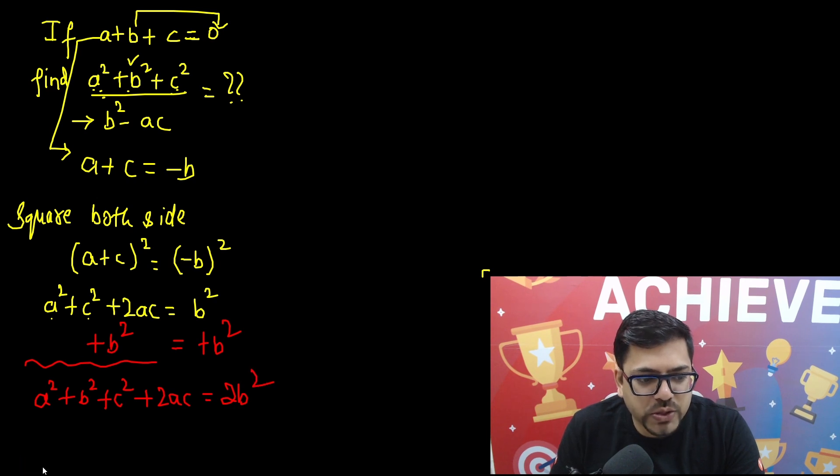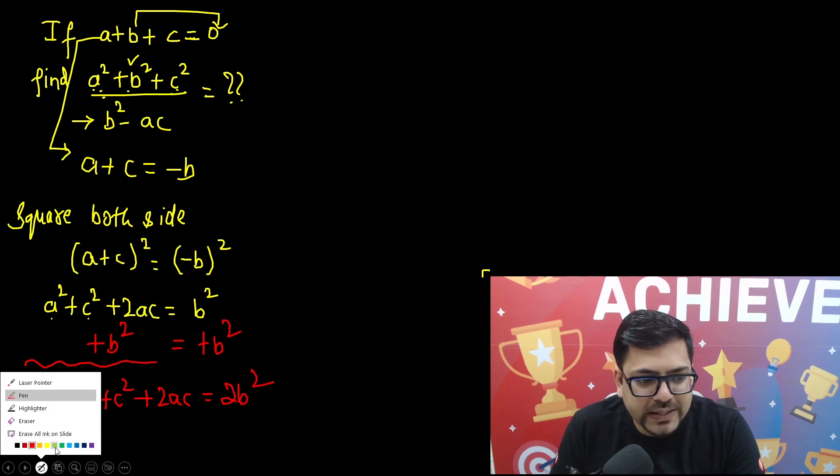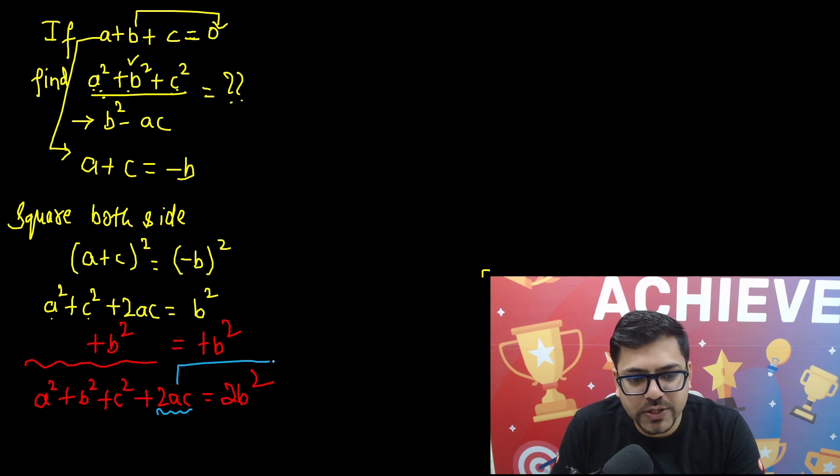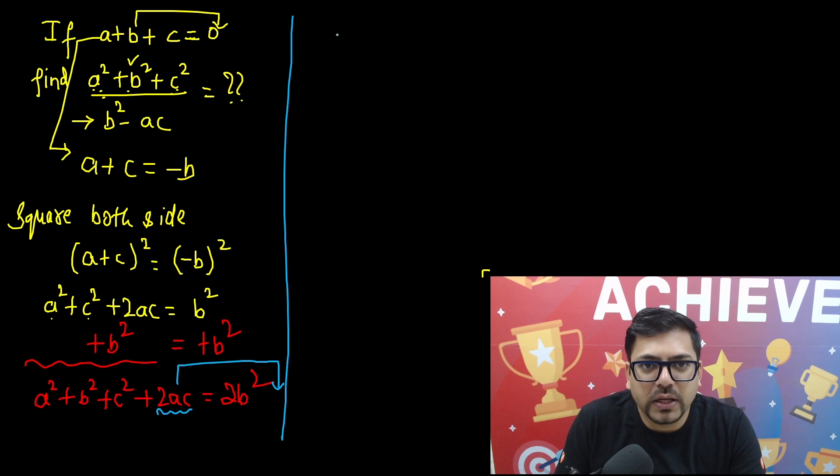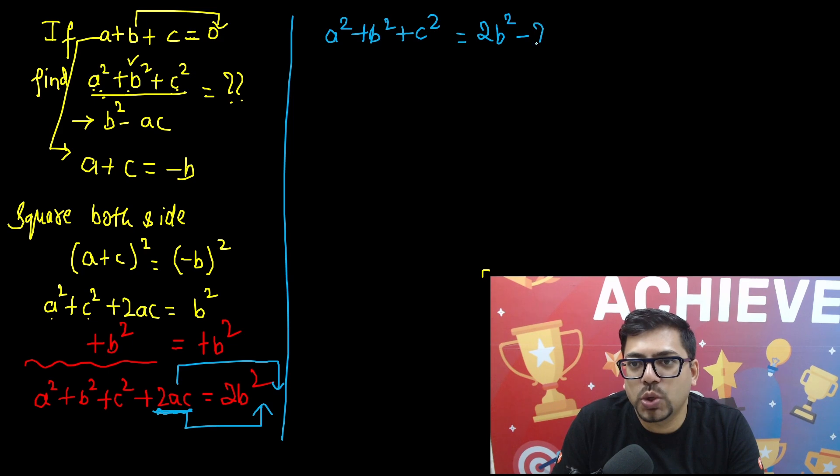Now you are able to see that we have got 2b square. At the same time, what if this 2ac, if I send this to the other side? So if I send this to the other side, this will become a square plus b square plus c square on the left hand side and this 2ac going to the right hand side, so it will become 2b square minus 2ac.